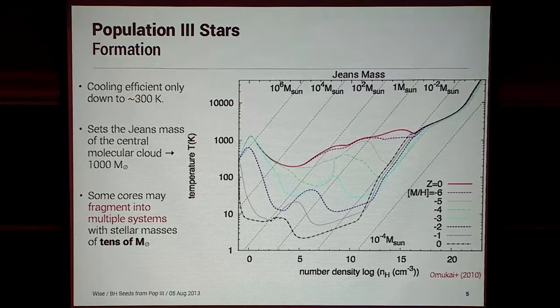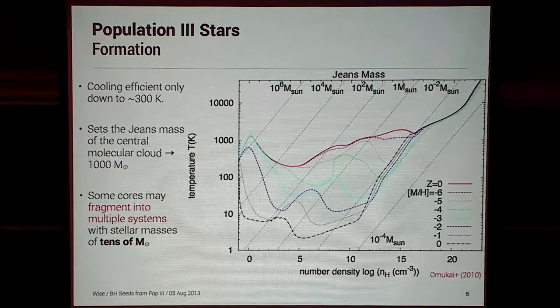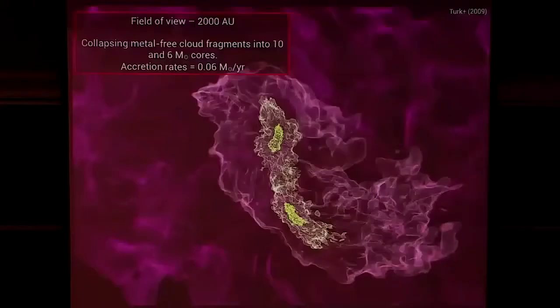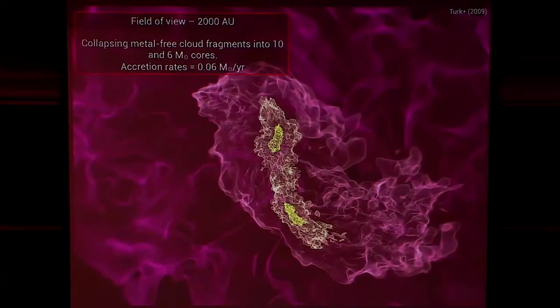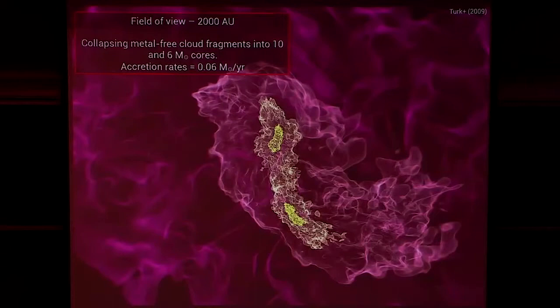Originally, Pop III stars were thought to be forming in isolation, one per halo. But in the past five years, people have been finding fragmentation on a much smaller scale than 1,000 solar masses — fragmentation of cores around tens of solar masses. One example from Matt Turk: in a cosmological simulation with a field of view of 200 AU, they saw fragmentation during the collapse, with two cores of six and ten solar masses that will not merge before reaching main sequence. This points toward binary and multiple systems in metal-free halos, still accreting at almost a tenth of a solar mass per year.